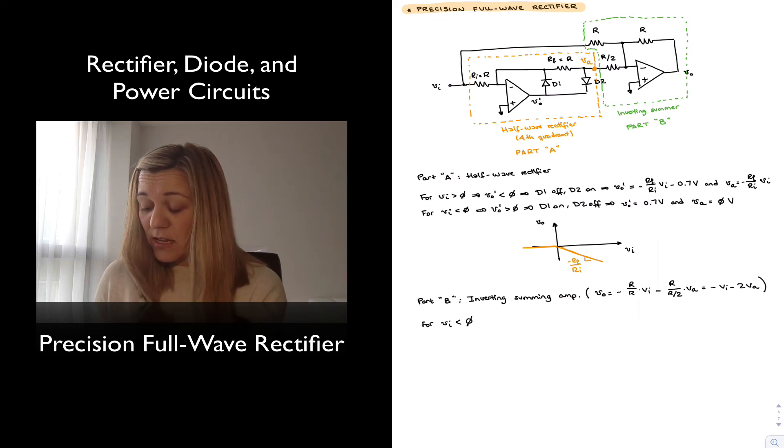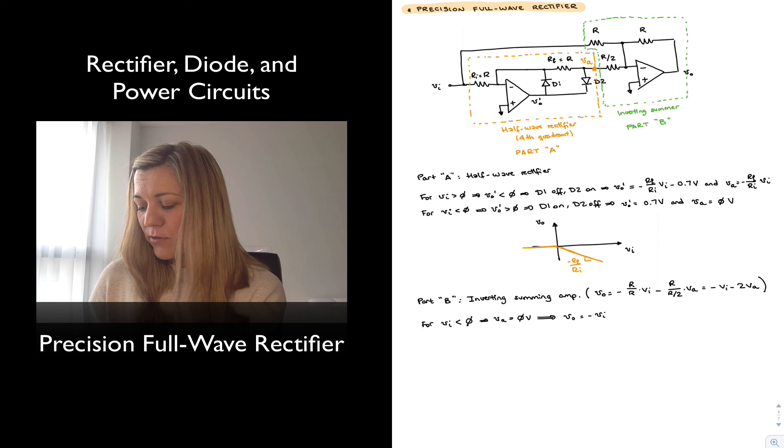So when Vin is less than 0, we have calculated that VA is equal to 0 earlier, and therefore my V out of this summing amplifier circuit is going to be equal to negative Vin minus 2 times 0, so minus negative or minus Vin.